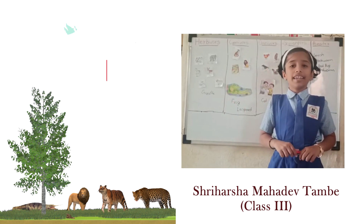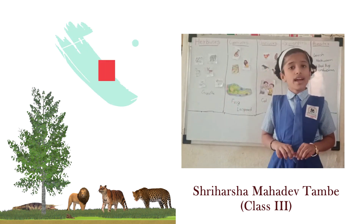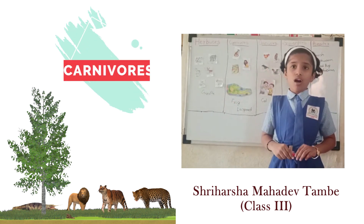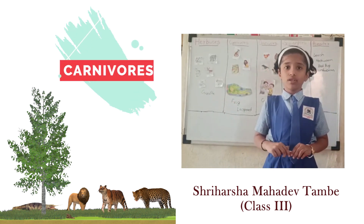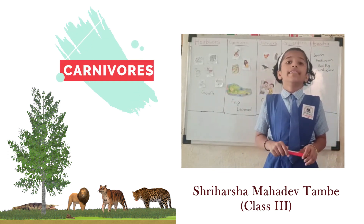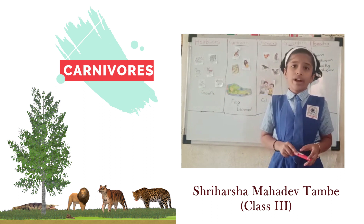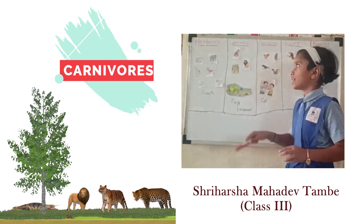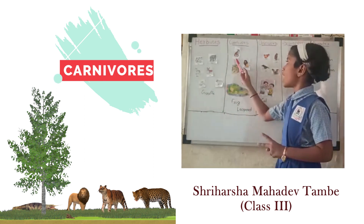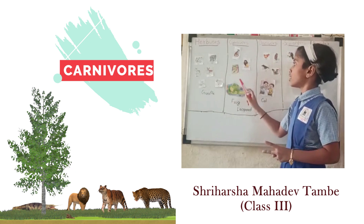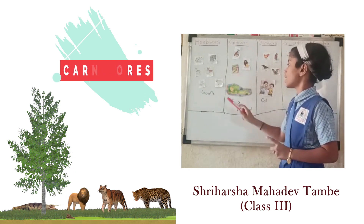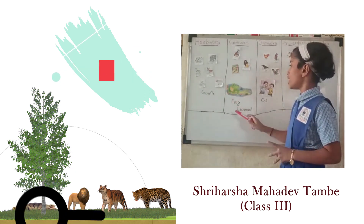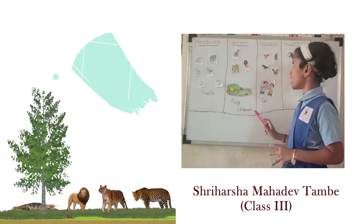The second category is Carnivores. Animals that eat other animals are called Carnivores. They have well-developed teeth for tearing flesh. For example, tiger, lion, snake, crocodile, leopard, etc.